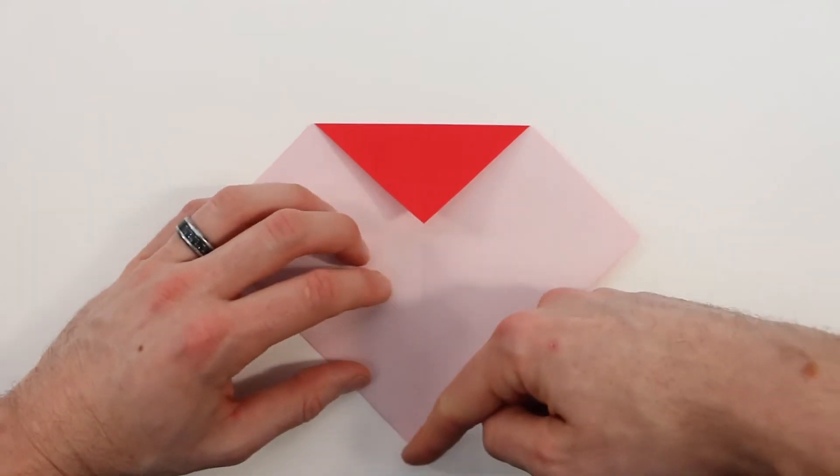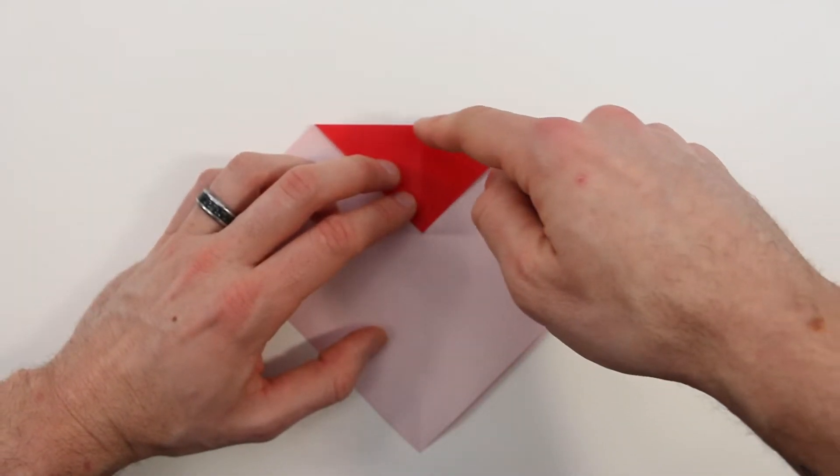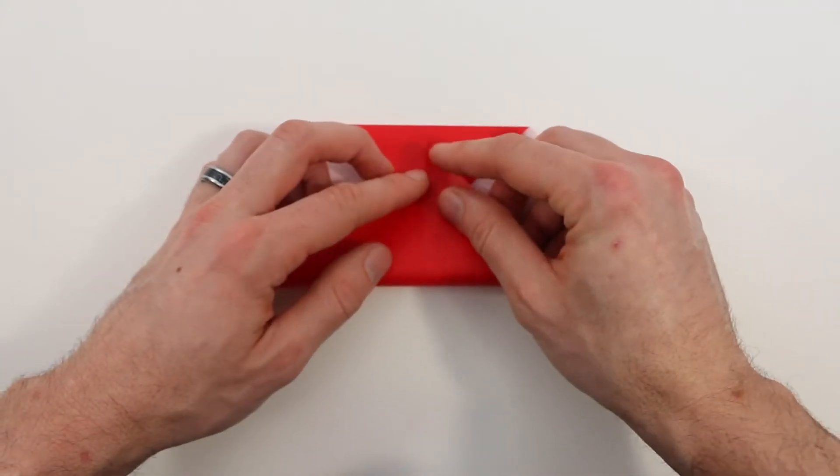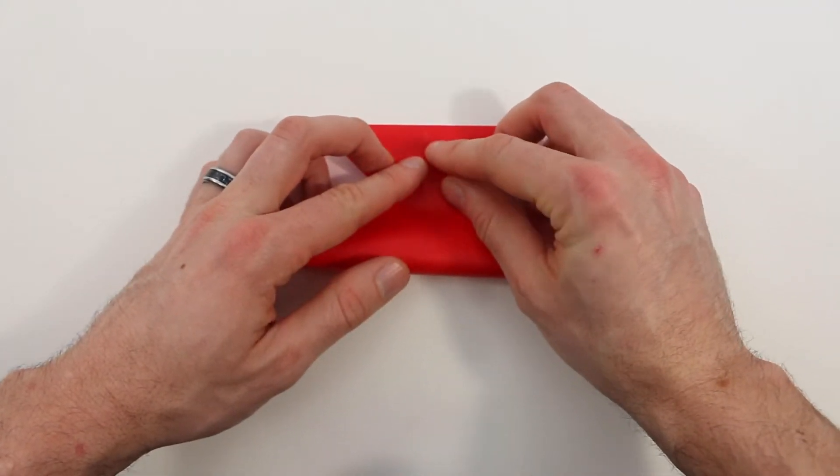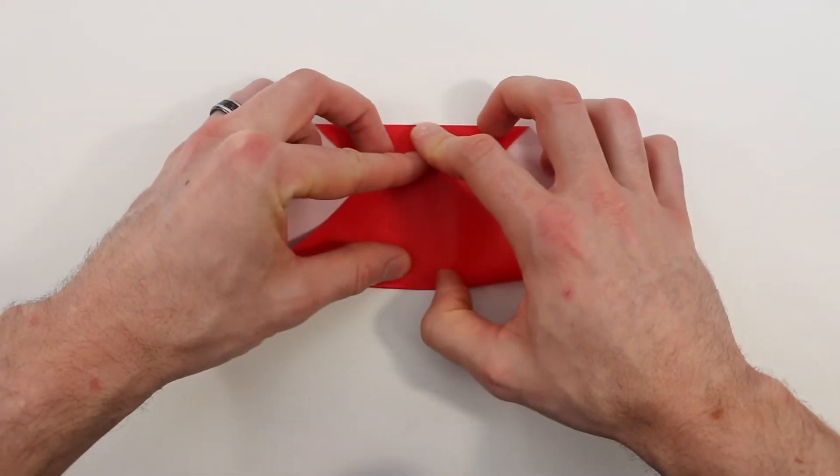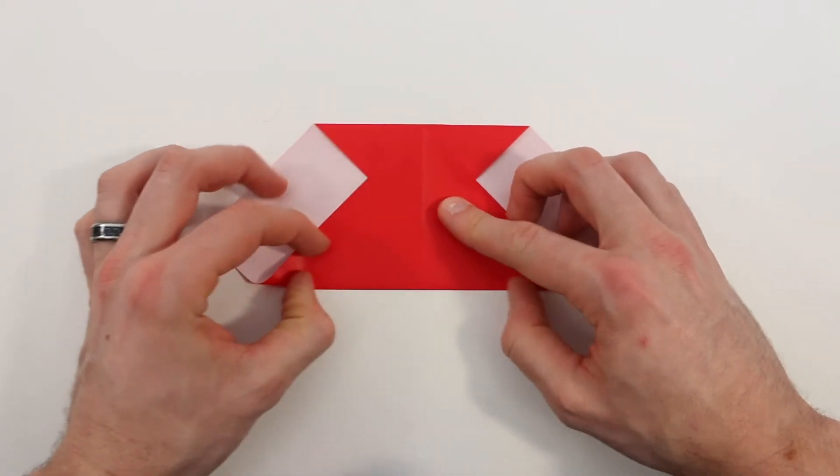Next we're going to bring this bottom corner up to the center on the top. Bring it all the way up to the top, and then it should line up with that vertical crease underneath, and then crease that across.